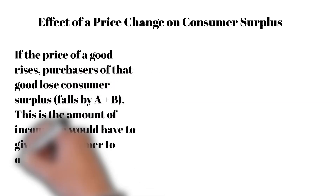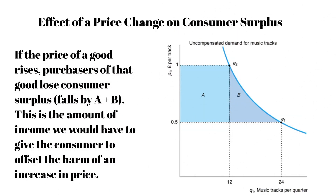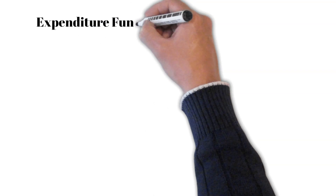If the price of a good increases, the consumer surplus will decrease. That is the amount of income we would have to give the consumer to offset the harm of an increase in price. One measure of the harm of a price increase is the income we will have to give the consumer to maintain the consumer's utility.